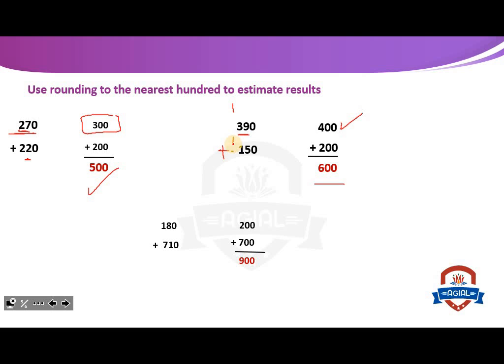The last one: 180 plus 710. For 180, the tens place is 8, so we increase the hundreds by 1 — 180 rounds up to 200. For 710, the tens place is 1, so we keep the hundreds as it is and convert tens and ones to 0 — 710 rounds to 700. So 200 plus 700 equals 900.